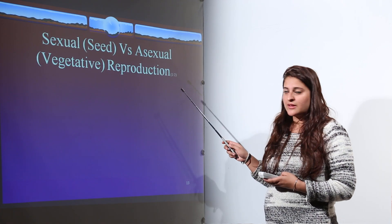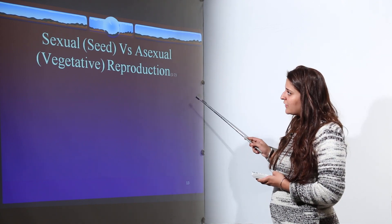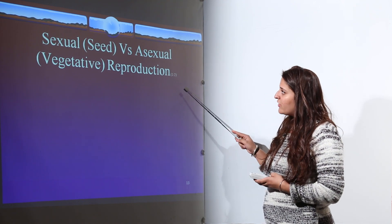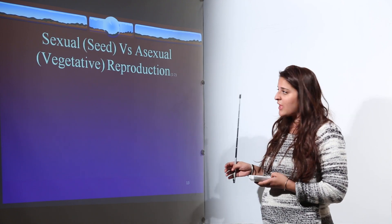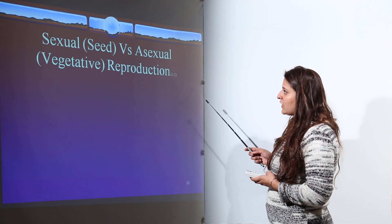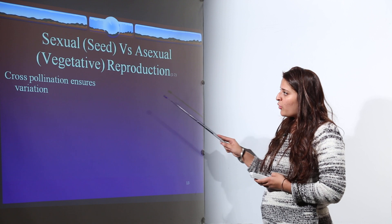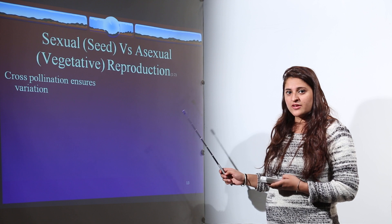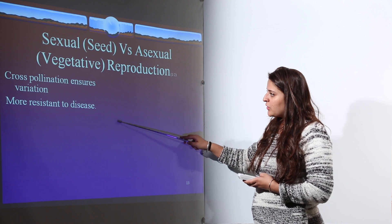These were all asexual modes of reproduction, also called vegetative methods. The key difference between sexual and asexual reproduction is that sexual reproduction involves fusion and formation of gametes, while asexual does not. In sexual reproduction, cross-pollination ensures variation, meaning different variations or mutations can occur in organisms. Sexual reproduction is also more resistant to disease.